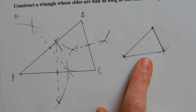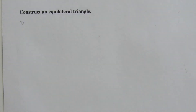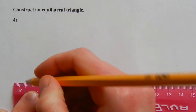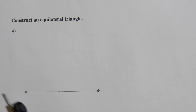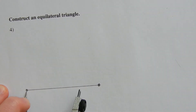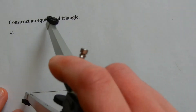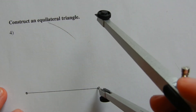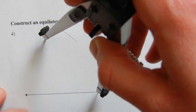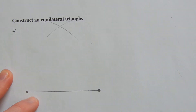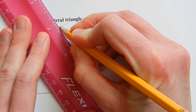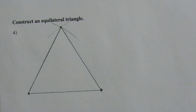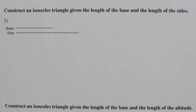For number four it says to construct an equilateral triangle. Remember, for an equilateral triangle all sides are equal in measure. I start by drawing one side, creating two endpoints. Since all sides are the same measure, I take that distance on my compass, make a mark from one endpoint, and using that same measurement make a mark from the other endpoint. That intersection will be my third point of the triangle — and there is my equilateral triangle.